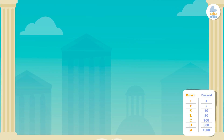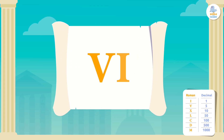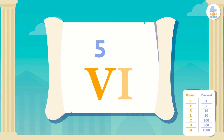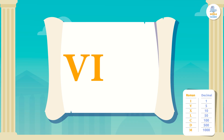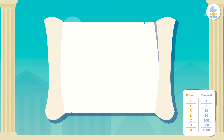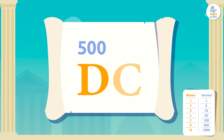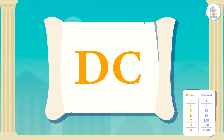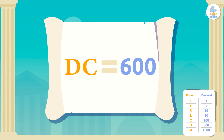Let's look at an example. This number is written from the greatest to the least, since V equals 5 and to its right is an I, which equals 1. So the letters V and I together equals 6. Let's look at another example. The letter D equals 500 and to its right is the letter C, which equals 100. It is written from greatest to least, so DC equals 600.